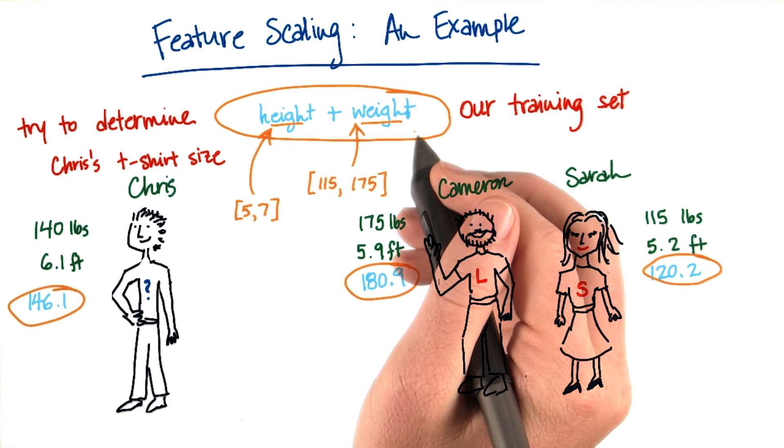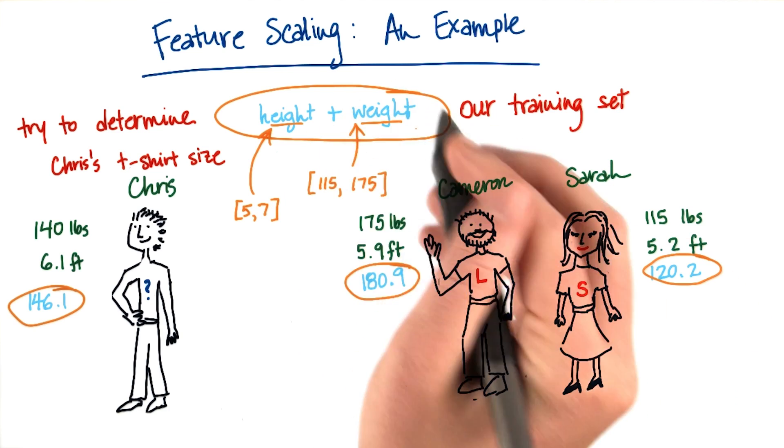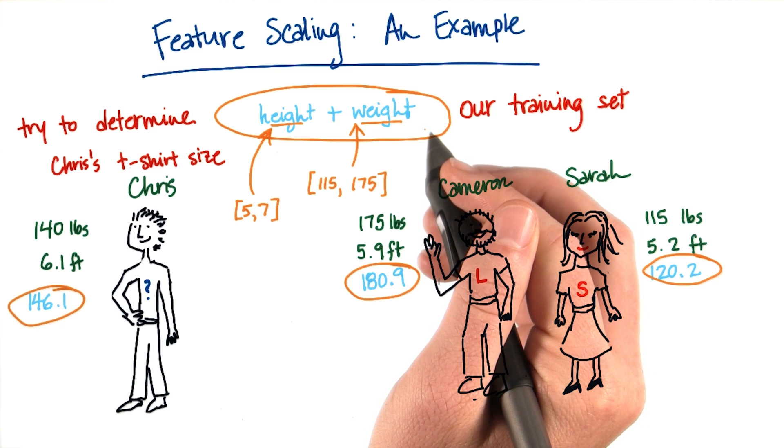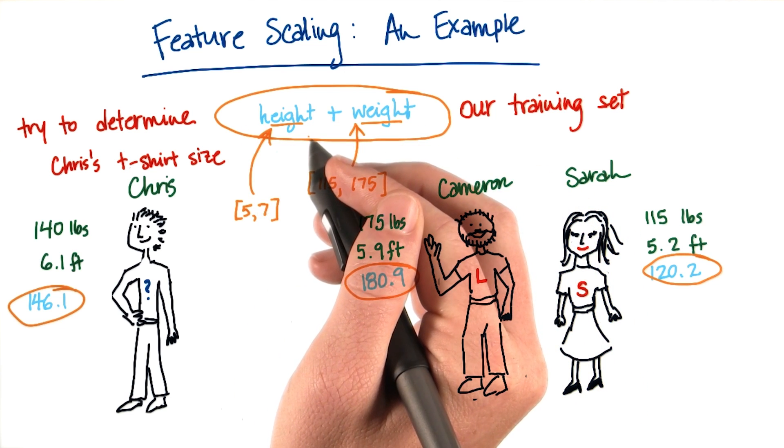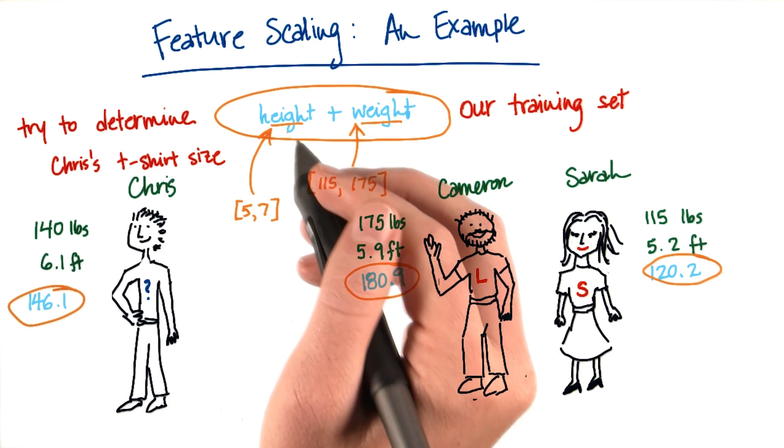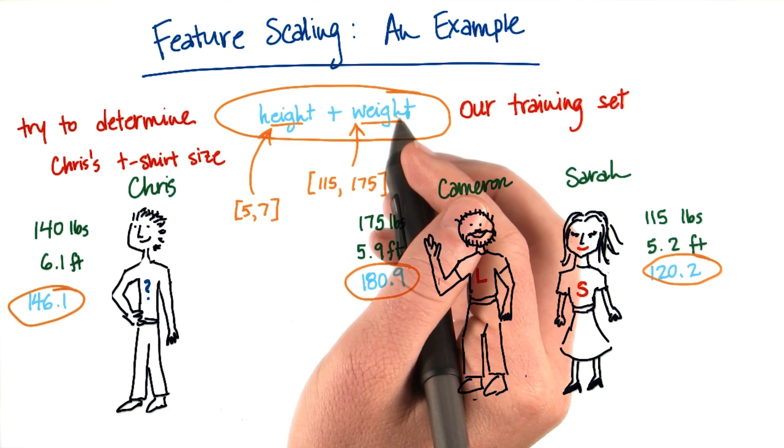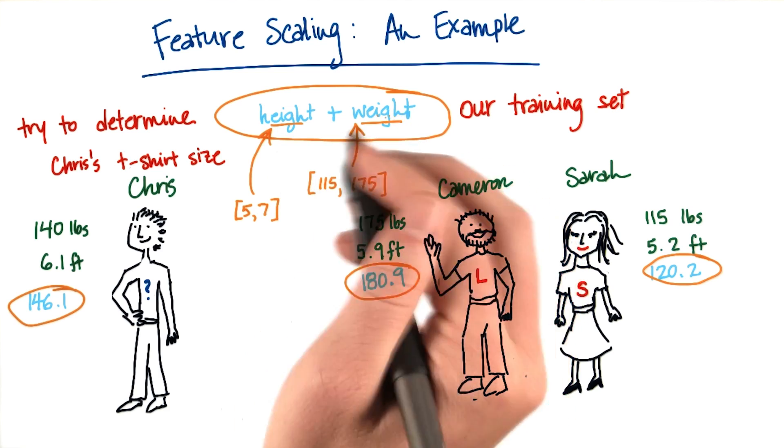So what ends up happening when you compute the sum of the two of them is that the weight almost always will completely dominate the answer that you get. And height ends up being effectively a rounding error. Whereas what you probably want is something where the two features are equally weighted in the sum when you add them together.